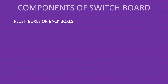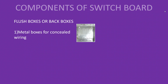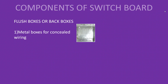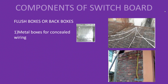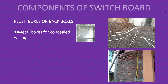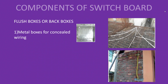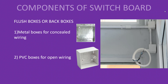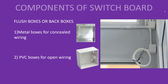The first component is flush boxes, back boxes or concealed boxes. Flush boxes provide back support for the wiring accessories and are available either in metal or PVC. For concealed wiring, where wires are concealed in the slab or wall, metal boxes are used. PVC flush boxes are used for open wiring or exposed installations.